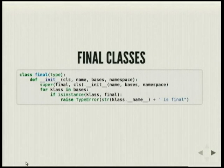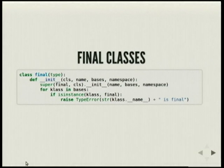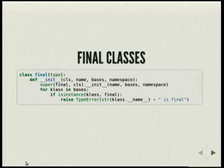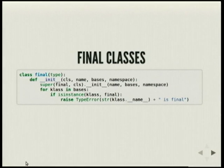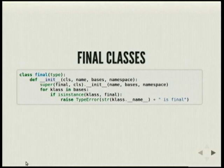You can also create classes that are final. When the class gets initialized, you check if the class that's getting initialized is an instance of one of the classes in its bases, and if so, you disallow it. So if you define one class with this metaclass, no other class will be able to inherit from that class.